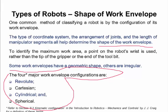Another important thing is to identify the maximum work area. A point on the robot's wrist is used, rather than the tip of the gripper or the end of the tool bit.